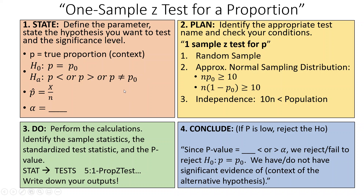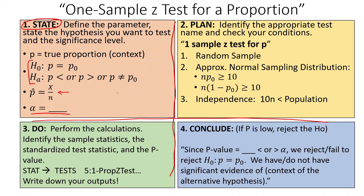How do we do the whole process? On our paper we should draw a big cross for each one of these problems and try to fill in each section. The first one is State — we want to state what p stands for, state our two hypotheses: null and alternative. If we have sample information like p-hat we state that, and we state our significance level. The second box is Plan, where we name the test: a one-sample z-test for p. We need a random sample, and we need to check if we have a normal sampling distribution.